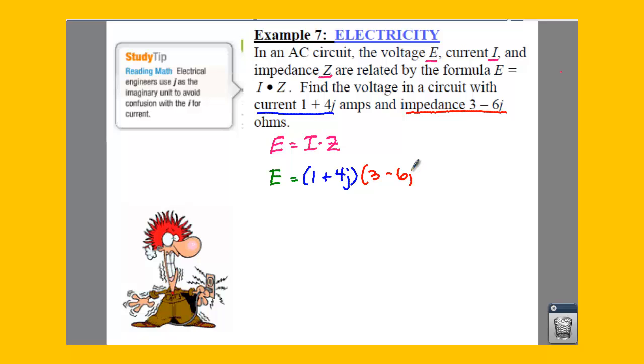So what we have to do is multiply these. Now these J's behave just like an I, so we have to FOIL. 1 times 3 gives us 3. 1 times negative 6J is negative 6J. 4J times 3 is 12J. And 4J times negative 6J is negative 24J squared.